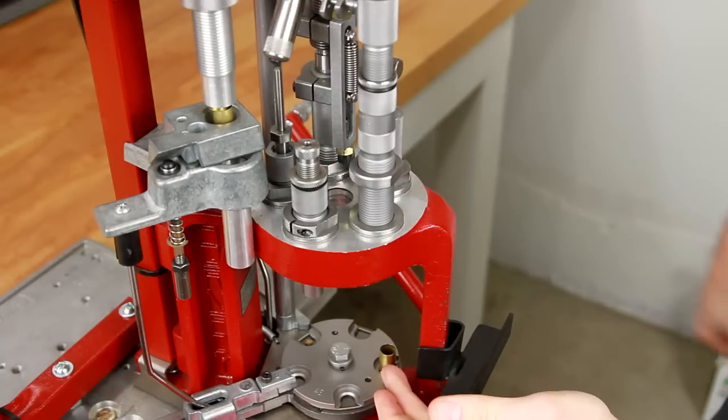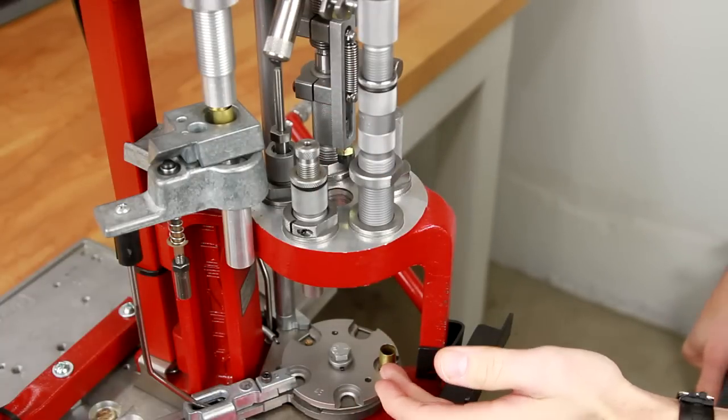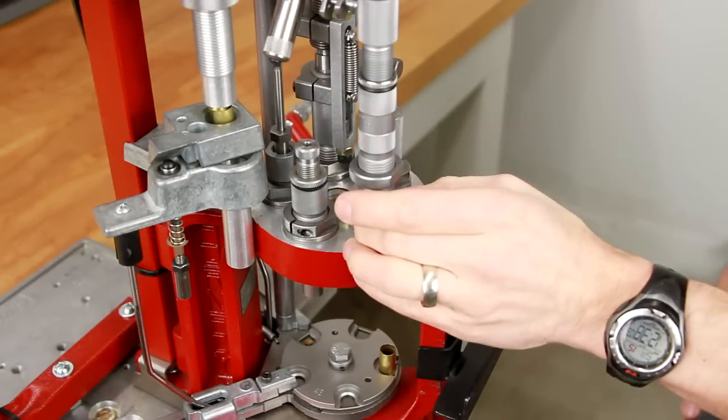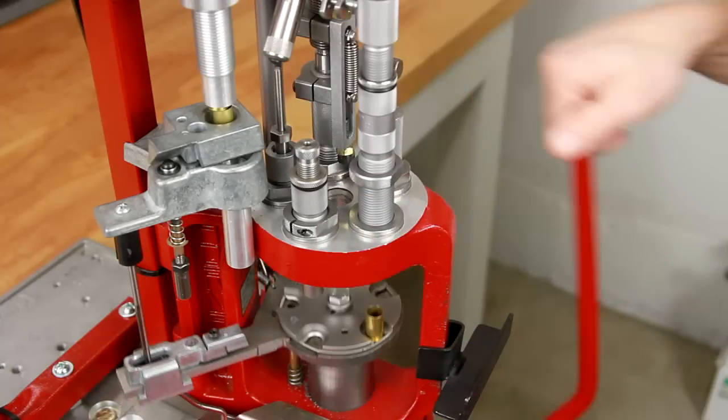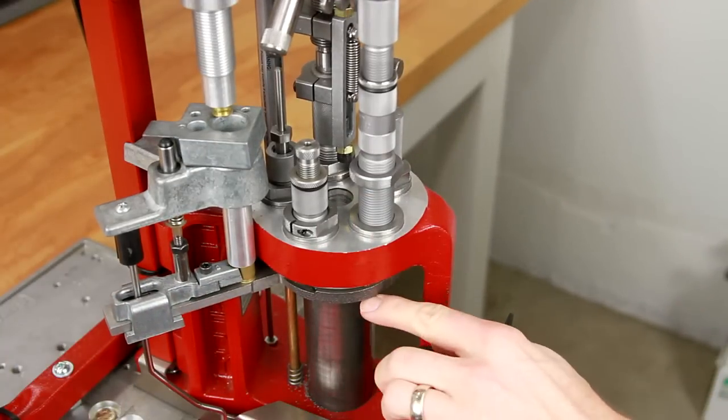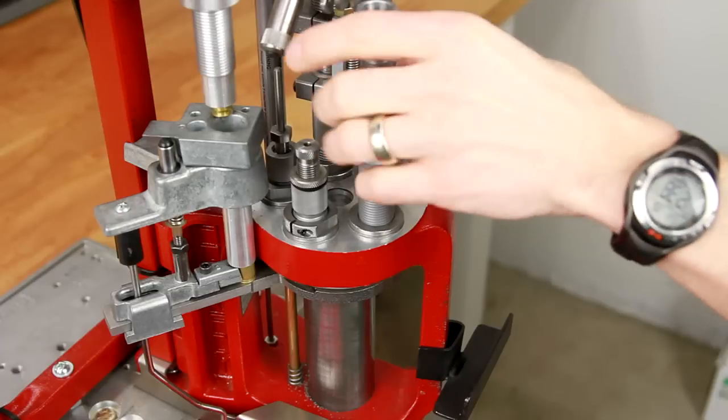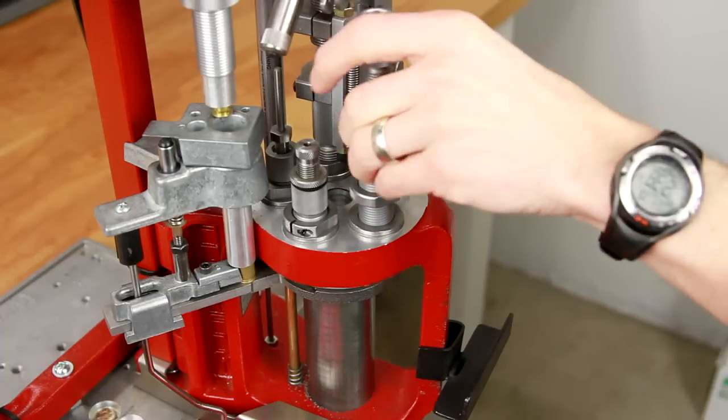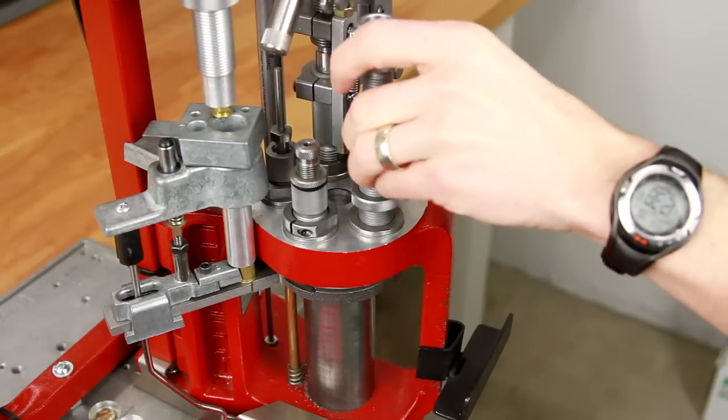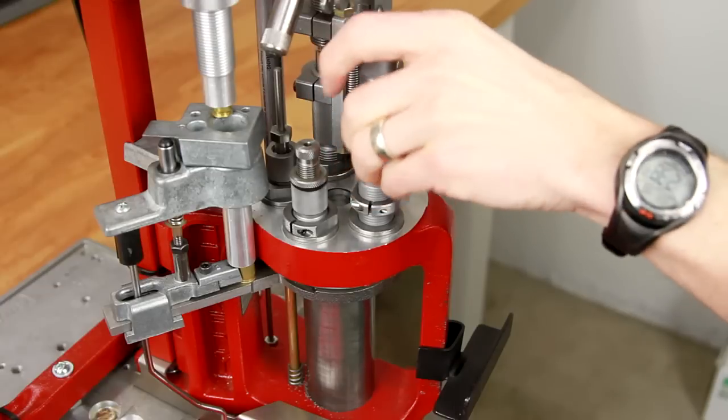We've already got a 45 ACP case directly under the station that's indexed into position for station number four. We're going to raise the ram with that case in the station while screwing the bullet feed die down. We're going to screw it down until we feel it touch the case.